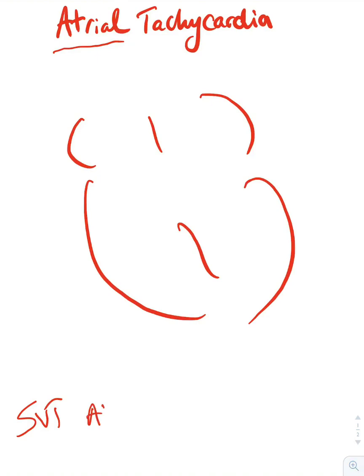The mechanism of atrial tachycardia is basically a focus that starts firing electricity, and that will take over instead of the sinus node. Once that electricity goes to the AV node, it's going to go to the bundles of His and create a QRS.